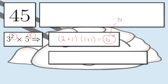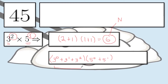Now let's check whether the sum of the factors is 78. Since we have powers of 3 and powers of 5, we expect a product of two terms. For the power of 3: we start with 3 raised to 0, then 3 raised to 1, then 3 raised to 2. For 5 raised to 1: 5 raised to 0 plus 5 raised to 1. Now, 3 raised to 0 plus 3 raised to 1 plus 3 raised to 2 equals 13. And 5 raised to 0 plus 5 raised to 1 equals 6. So 13 times 6 is 78 — the sum of the divisors of 45, which is correct.